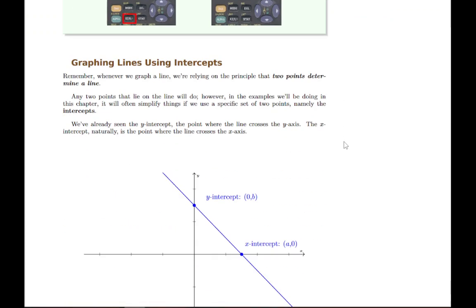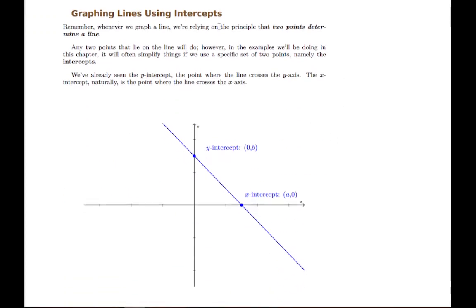There's another option instead of using the slope and intercept: we can also use the two intercepts, meaning the y-intercept and the x-intercept, because again we're just looking for two points that are on the line and these two are often easy to find.